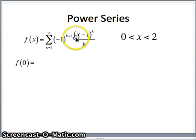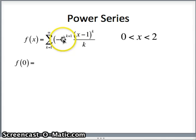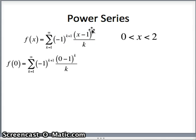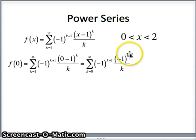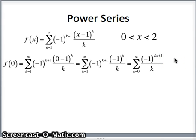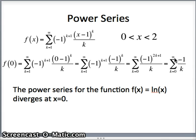Testing x equals 0: plugging in 0 gives 0 minus 1 to the k, which is negative 1 to the k. Combined with the negative 1 to the k plus 1 factor, we get negative 1 to the 2k plus 1. Since 2k plus 1 is always odd, negative 1 to an odd power is always negative 1. This becomes the sum from k equals 1 to infinity of negative 1 over k, which is the negative harmonic series — it diverges. This makes sense because 0 is not in the domain of natural log of x, so it shouldn't surprise us that our power series diverges at x equals 0.